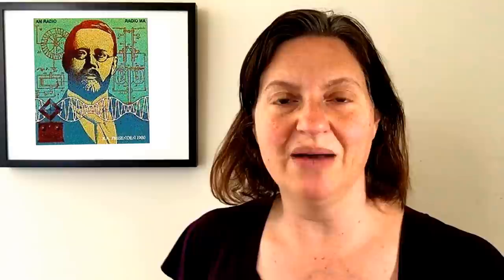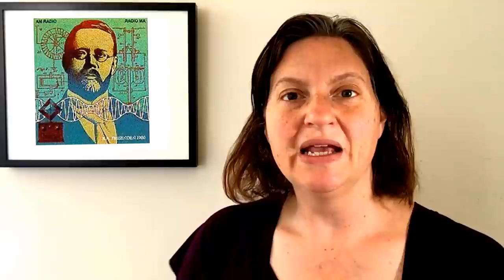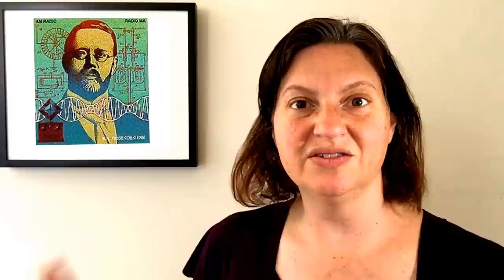However, Fessenden persevered and eventually got a job burying electrical lines for Edison. Fessenden quickly moved up the ranks to become Edison's chief chemist. Fezzy, as Edison called him, heard about Hertz's experiments in creating and transferring radio waves. He asked Edison permission to study wireless, which Edison agreed to as soon as he returned from the Paris Exposition. However, as soon as Edison returned, the whole laboratory was shut down due to financial difficulties and Fessenden was out of a job.